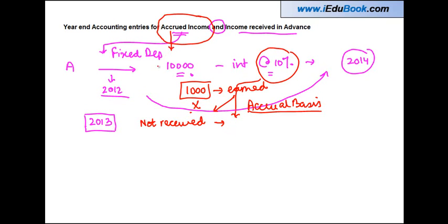So such an income is known as accrued income. Accrued means to become due or receivable. So basically receivable in this particular case. Accrued does not necessarily mean receivable, it could be payable also.